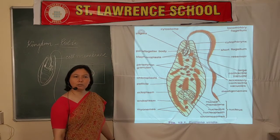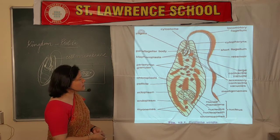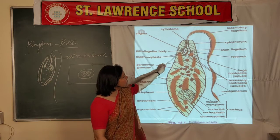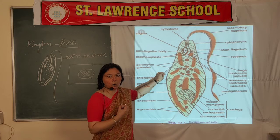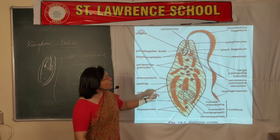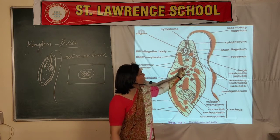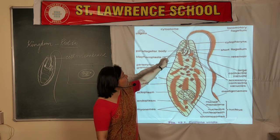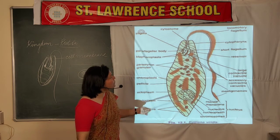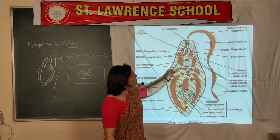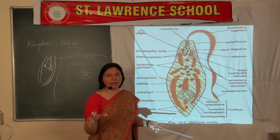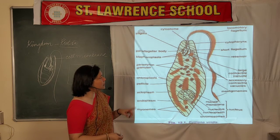Looking at the diagram of Euglena: the mouth-like cavity is called the cytostome — the opening — and the inner region is the cytopharynx, similar to our pharynx. There is a single flagellum for locomotion — a budding short flagellum at the base and the full flagellum running down, but only one flagellum is present in the organism.